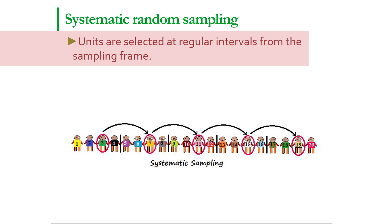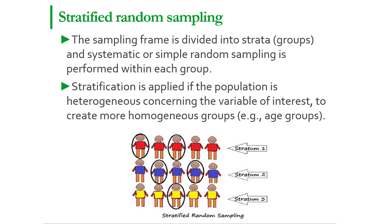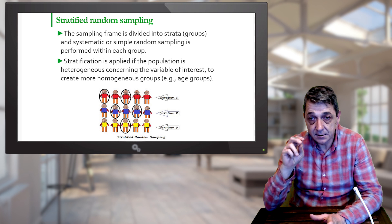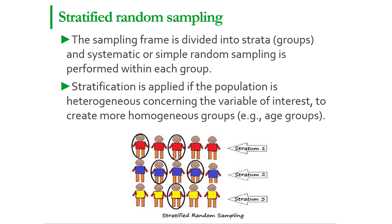Similarly for 10%, instead of drawing a random number between 1 and 100, we draw a number between 1 and 10 and end up with 10% at the end. In stratified random sampling, the sampling frame is divided into separate strata before the selection. Then systematic or simple random sampling is performed within each group. Stratification is applied when the result of interest is heterogeneous between different strata of the population, and with stratification we make these results more homogeneous. Stratified random sampling is more flexible than simple random sampling because we can use different sample sizes within each stratum.